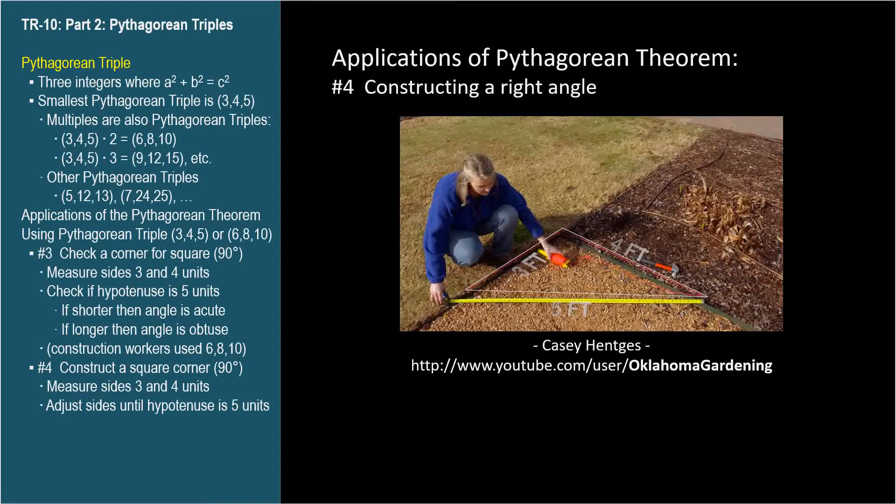Adjusting the angle between the 3 and 4 sides until the hypotenuse is 5 will result in a right angle. She even uses the word hypotenuse.